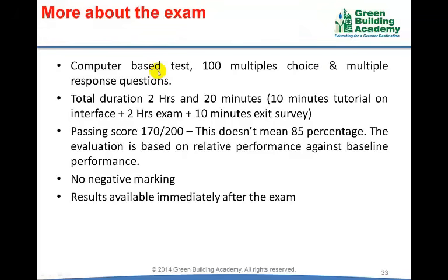It is a computer-based examination with 100 multiple choice and multiple response questions. Multiple response questions may have more than one answer. The total examination duration is 2 hours and 20 minutes. The first 10 minutes will be a tutorial on the examination interface, the next 2 hours will be the actual examination, and the last 10 minutes will be an exit survey. The tutorial and exit survey are optional. The exit survey collects your feedback about the Prometric exam center. The passing score is 170 out of 200. Each question carries a different weightage — difficult questions carry more and easy questions carry less. There is no negative marking, so you must attend all questions. Results are immediately available after the examination, and Prometric staff can provide a printout of your scorecard.